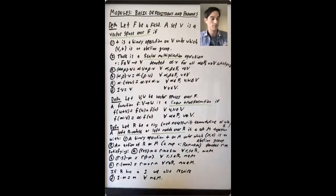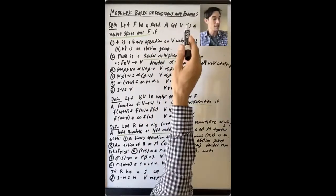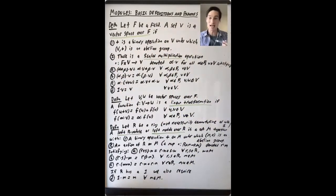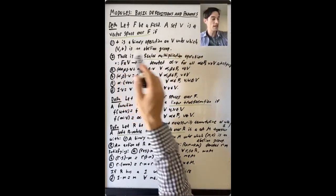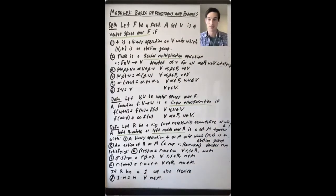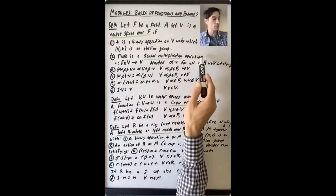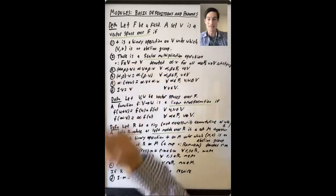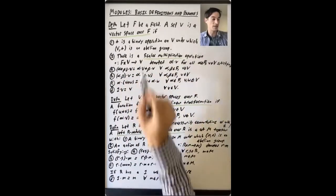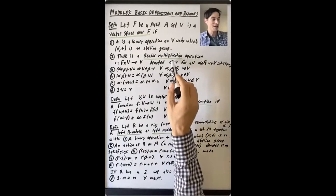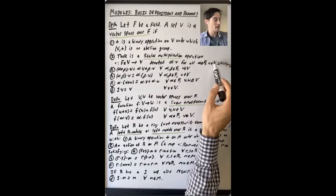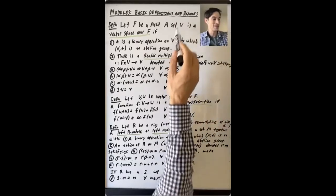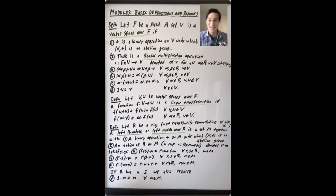Let's say that f is a field. A set v is a vector space over f if it satisfies the following axioms. It has a binary operation plus that turns v into an abelian group. And there's a scalar multiplication operation dot, which you can think of as a function from f cross v to v, denoted alpha dot v, where alpha is some element of your field f and v is some vector in v.